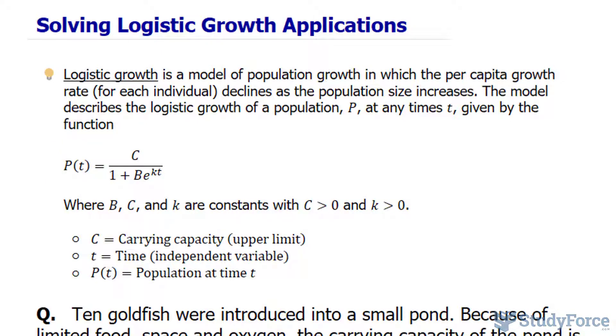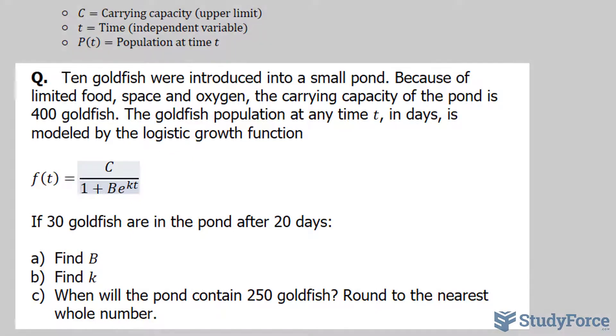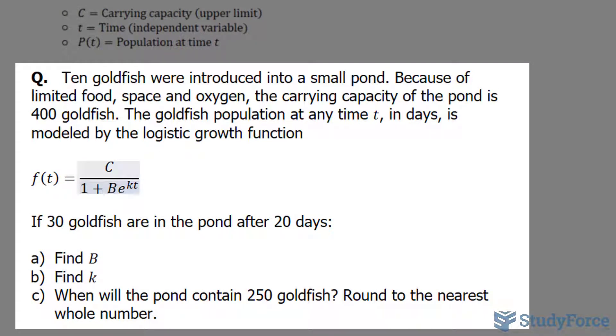With that being said, let's take a look at the question. It reads: 10 goldfish were introduced into a small pond. This part's important, 10 goldfish, we'll need that for later. Because of limited food, space, and oxygen, the carrying capacity of the pond is 400 goldfish. The goldfish population at any time t in days is modeled by the logistic growth function shown underneath. If 30 goldfish are in the pond after 20 days, find B, find K, and when will the pond contain 250 goldfish?